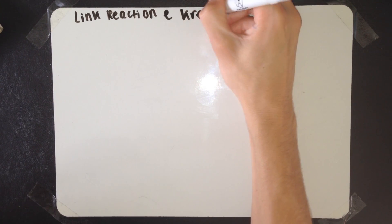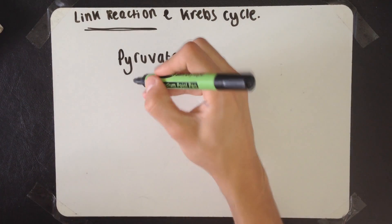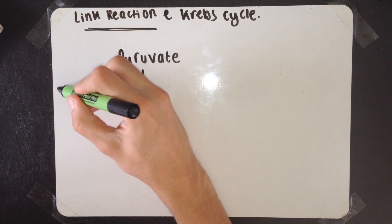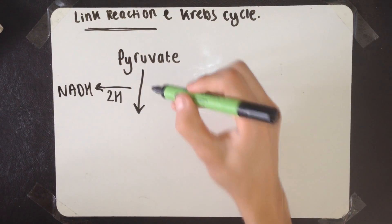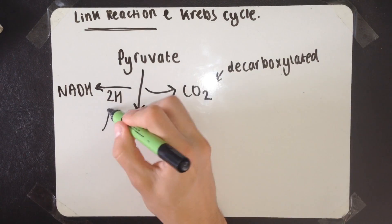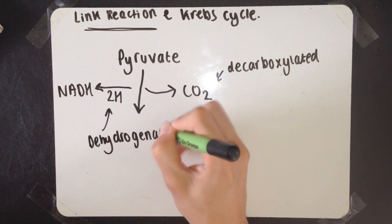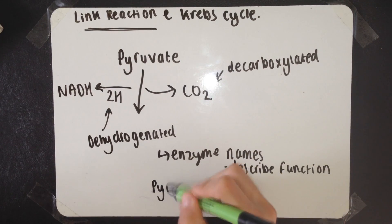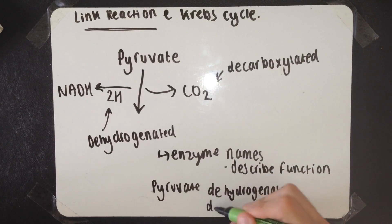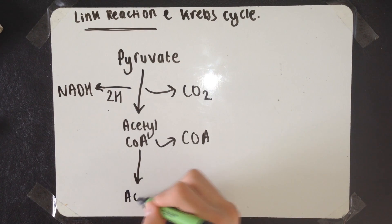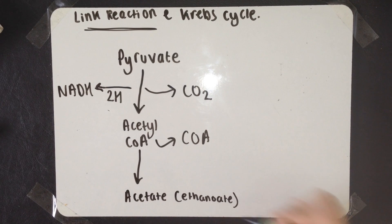I'm now going to talk about the link reaction which occurs in the matrix of a mitochondrion. If you remember, a pyruvate molecule came from glycolysis. Two hydrogens are removed from the pyruvate molecule and they join with NAD to form reduced NAD. Also, a CO2 group is removed. The process of removing CO2, a carboxyl group, is known as decarboxylation. The process of removing hydrogen is known as dehydrogenation. The enzymes for these are pyruvate dehydrogenase and pyruvate decarboxylase. The enzyme names are quite self-explanatory. They describe the function. It always has -ase on the end. For example, it's been dehydrogenated, so it's dehydrogenase. Next, you're left with acetyl coenzyme A. The coenzyme A leaves, so you're essentially left with acetate, which is essentially an ethanoate ion.